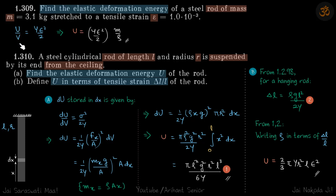We know U by V is Y epsilon squared by 2. Now we are not given volume but we are given mass, so we will write the volume as mass by rho and this will be our answer.